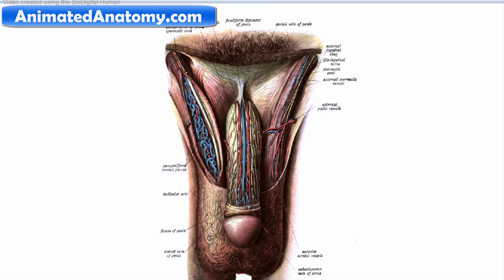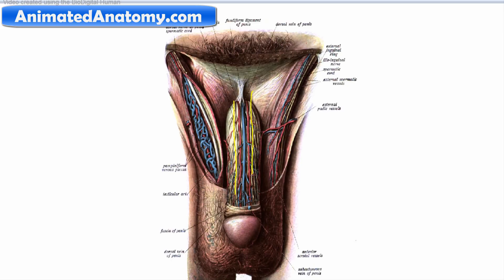Now we're looking at the penis from the superior point of view. Here we have the corpus cavernosum on the left side and the corpus cavernosum on the right side as well. Down underneath we can find the corpus spongiosum of the penis. These bodies are important for erection — they are sponge-like tissue filled with blood through the cavernosal arteries that run through them.